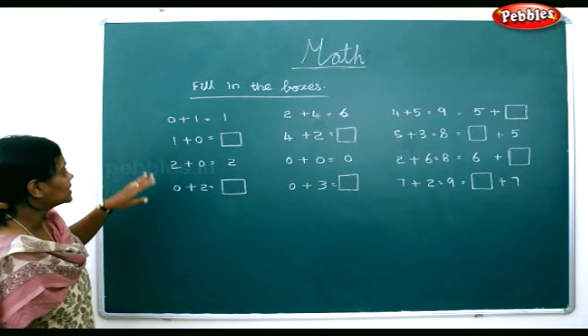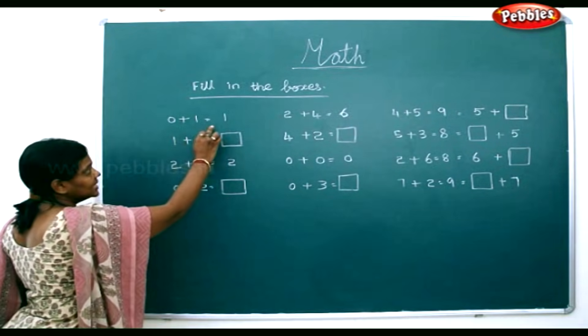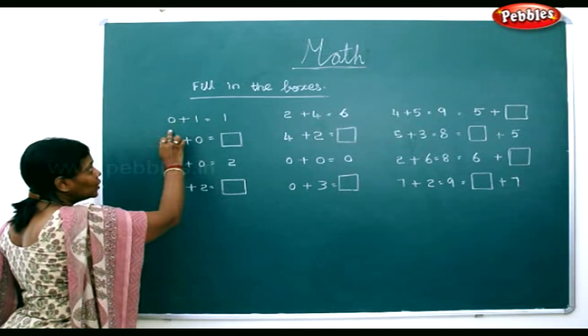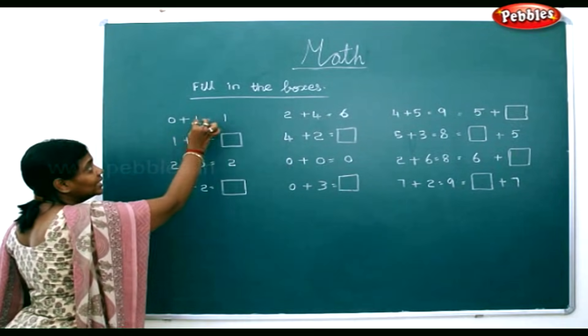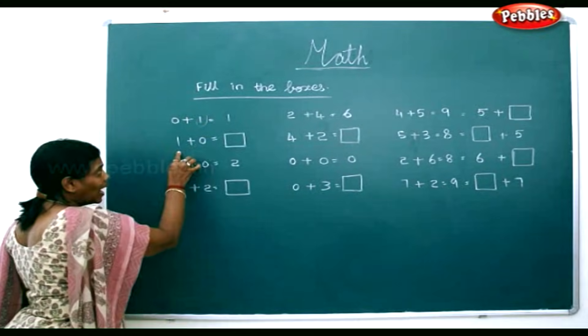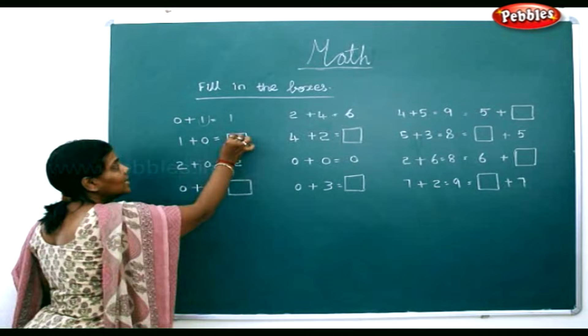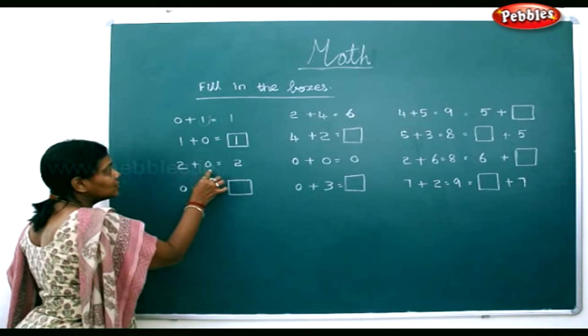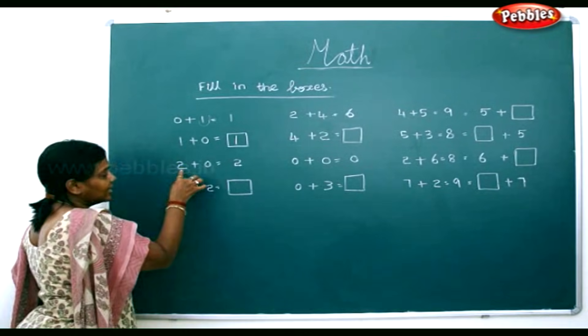Now we will fill in the boxes. 0 plus 1 is equal to 1. So 0 added to any number will be the number itself. 1 added to 0 also will be 1. 2 added to 0 also will be the number itself.